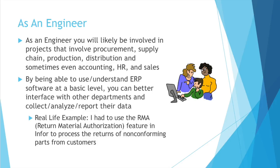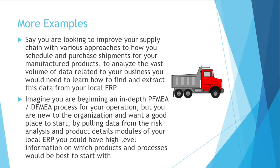For example, when I was an engineer, I had to use the RMA — Return Material Authorization — feature in N4, one of the larger ERP software providers, to process returns in the quality department. Say you are looking to improve your company's supply chain with various approaches on how to schedule and purchase shipments for your manufactured products. To analyze a lot of this data, you're going to need ERP software to pull the different things together.